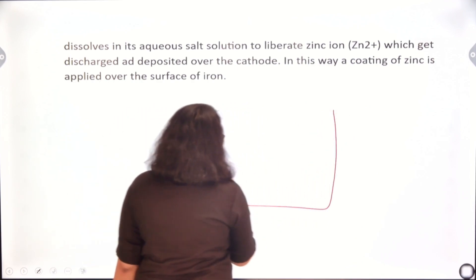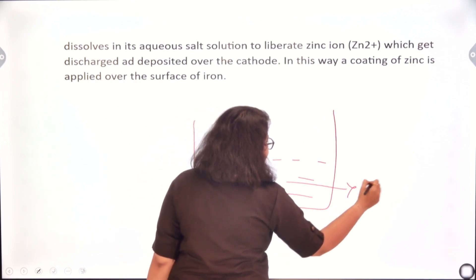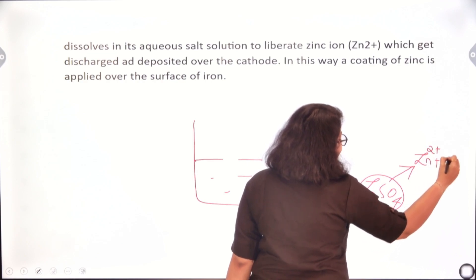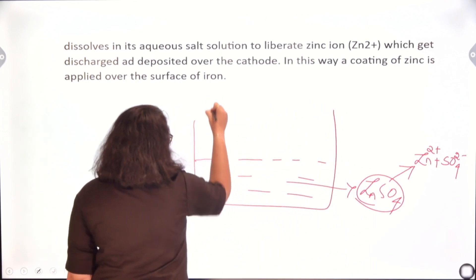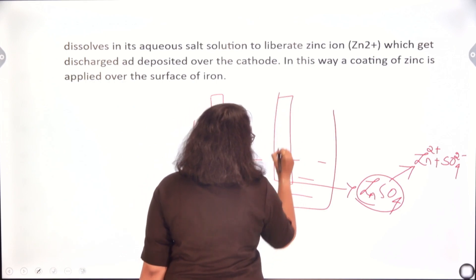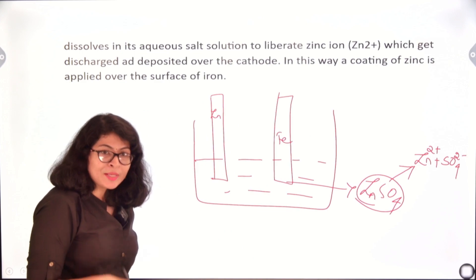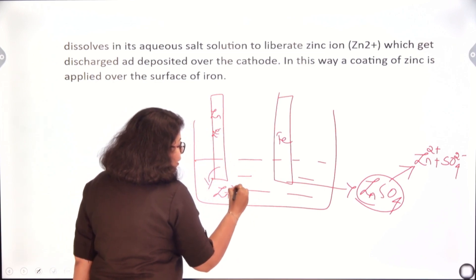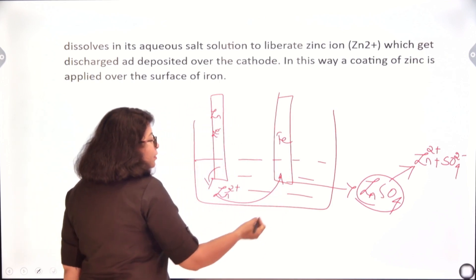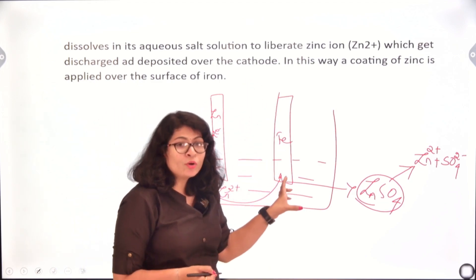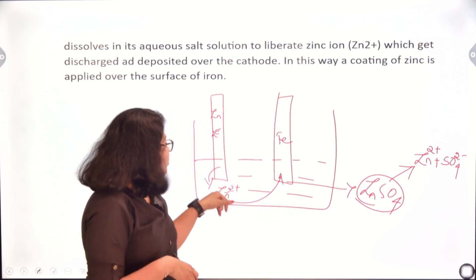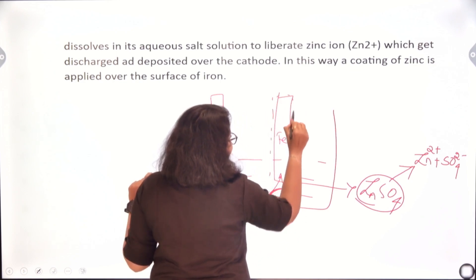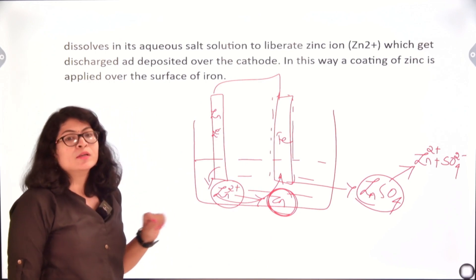When electricity is passed, the zinc sulphate breaks down into Zn²⁺ and SO₄²⁻. At the anode, oxidation takes place — zinc atoms leave behind two electrons and move into the solution as Zn²⁺. These Zn²⁺ ions travel to the cathode (the negative terminal), where reduction takes place — Zn²⁺ gains electrons and gets converted into Zn metal, which gets deposited on the surface of the iron. The two electrodes are connected through a battery source. This is basically the process of galvanization.